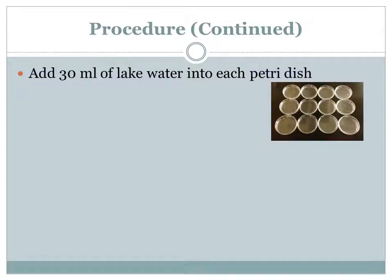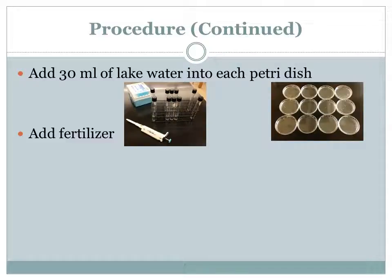Once I had created the dilutions and gathered a sample of lake water with a high density of algae, I was ready to begin the experiment. I added 30 milliliters of the lake water I collected into each of my 12 petri dishes. Then I added fertilizer — I used a micropipette to measure one milliliter of the corresponding sodium nitrate and phosphoric acid solutions and mixed it into the petri dish.